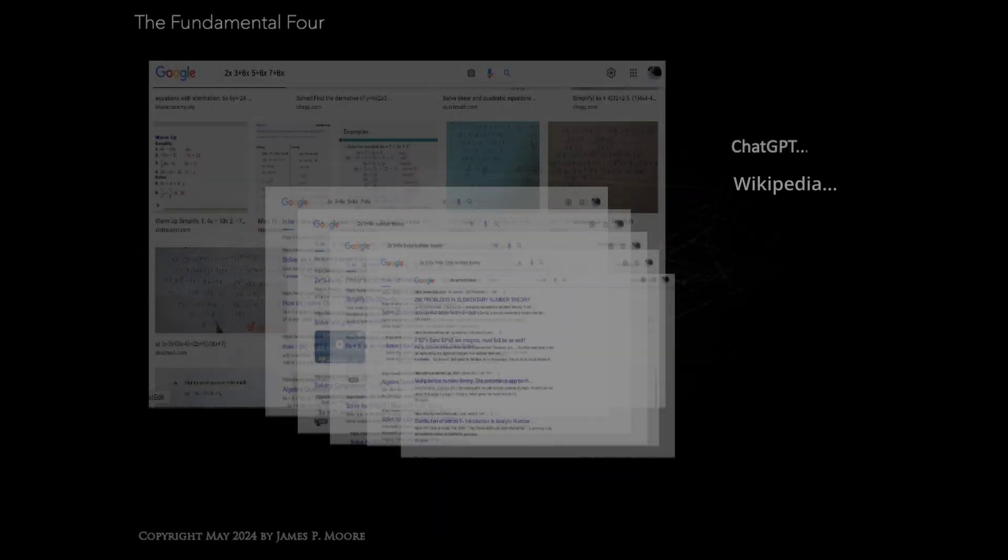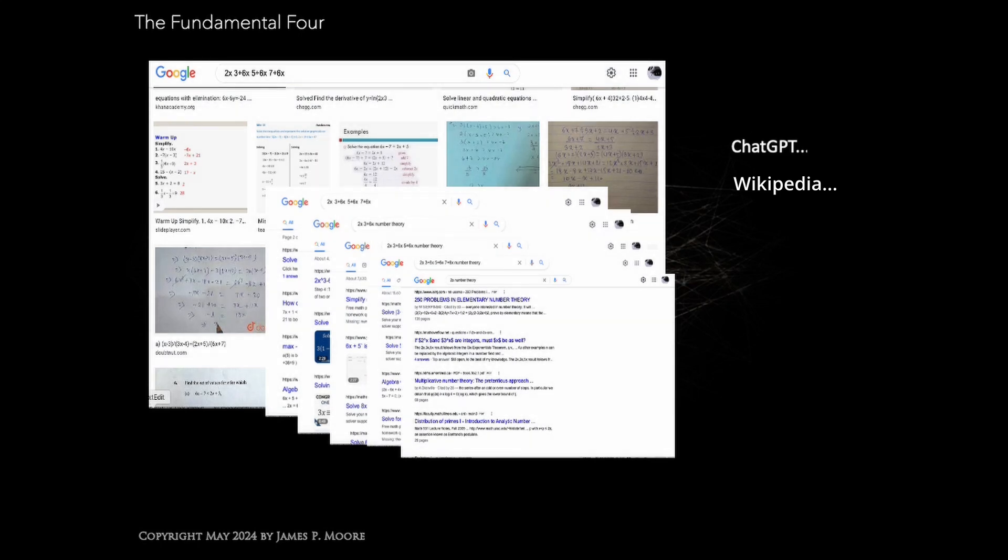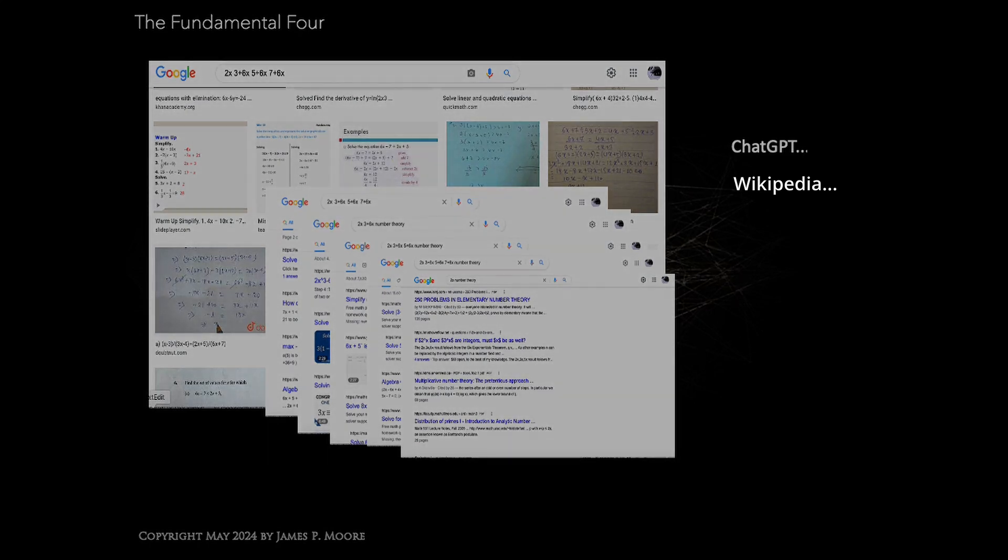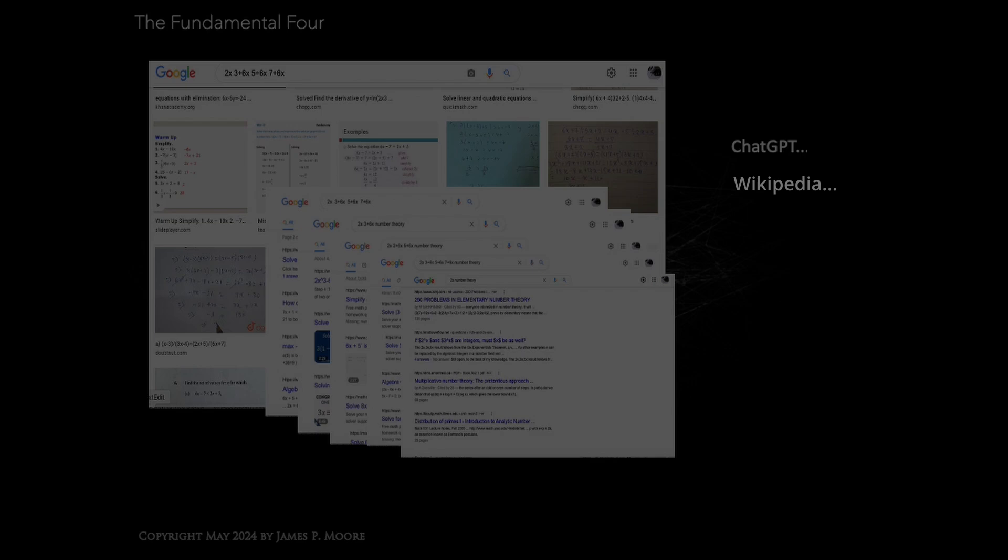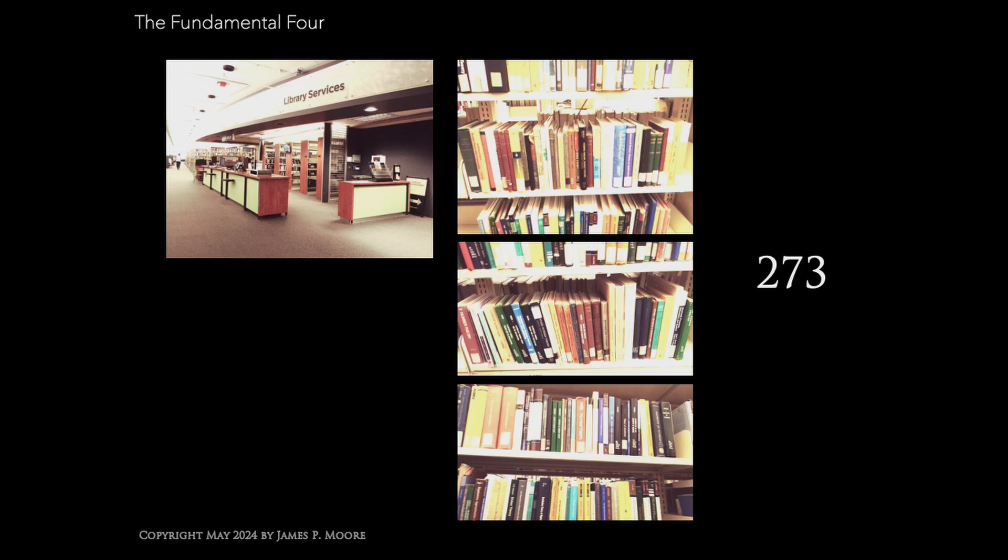Interestingly, if you type in 2x, 3 plus 6x, 5 plus 6x, 7 plus 6x into Google and ChatGPT, there are no records indicating that they've ever been studied in such a manner. To confirm, I went to the University of Waterloo Library here in Canada. They have 273 physical books on the shelves in number theory and prime numbers. Not a single one describes these equations in the history.